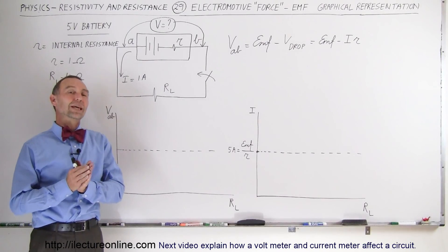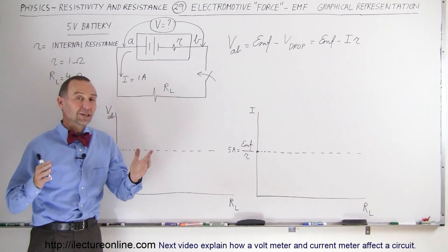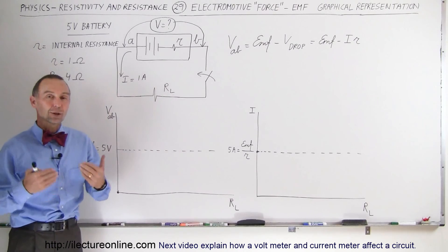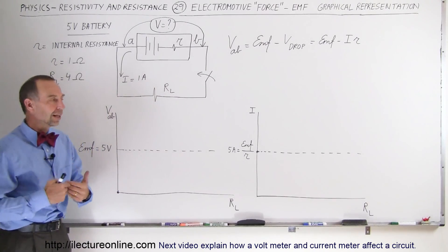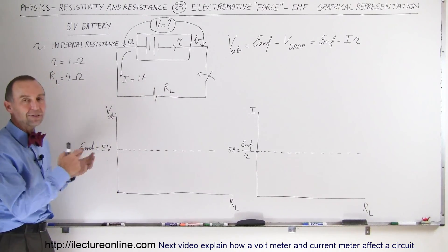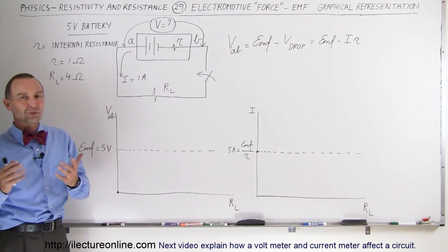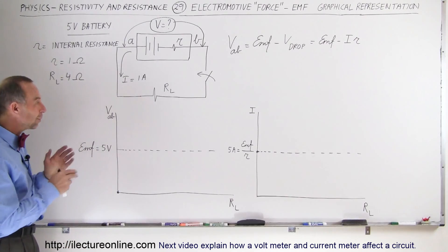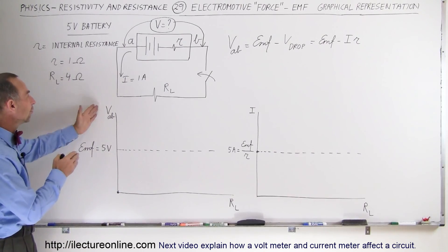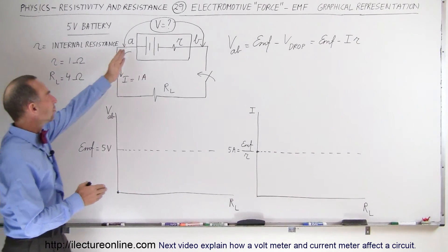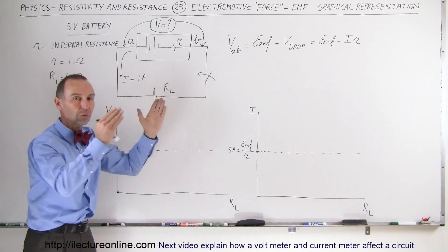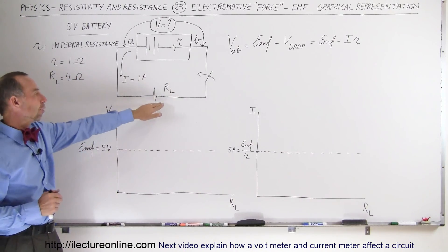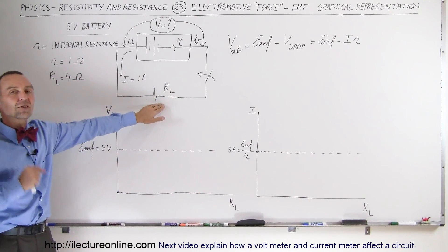Welcome to Electron Online. To get a better understanding of the EMF and how it relates to a circuit and the load resistor, let's do a graphical representation. A picture is worth a thousand words. We're going to represent the voltage from A to B — the voltage across the battery from A to B — under different load resistor conditions.